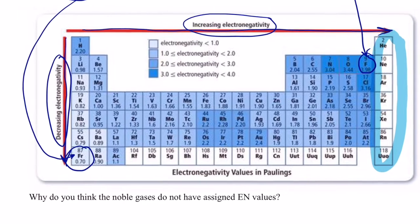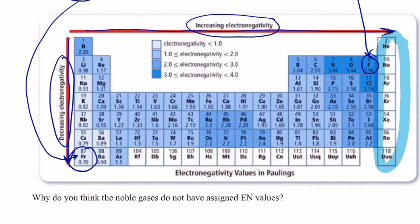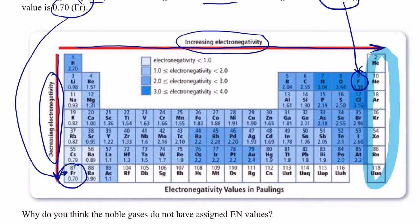The noble gases don't have an electronegativity because they don't need to attract electrons to themselves — they do not form chemical bonds. We ignore the noble gases when talking about electronegativity values because it is highly unusual that they form bonds. So once again, the highest is fluorine and the lowest is francium.